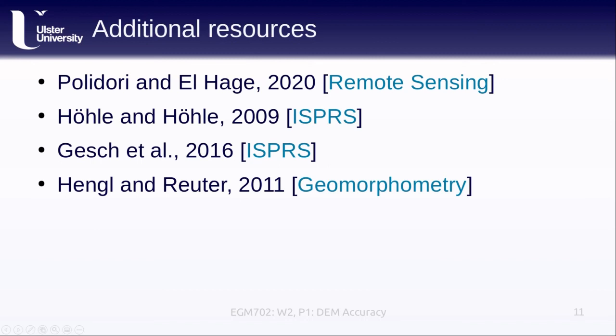There's a few different papers here that I'd like you to have a look at. The first is this paper from last year by Polidori and El Hage in Remote Sensing. This is a good overview of accuracy analysis of DEMs. There's another paper from 2009 by Höhle and Höhle, which looks at specifically using robust metrics to estimate the accuracy of DEMs. And then there's a couple of other papers here that you can have a look at that go into some more detail about accuracy estimation of different DEM data sets.